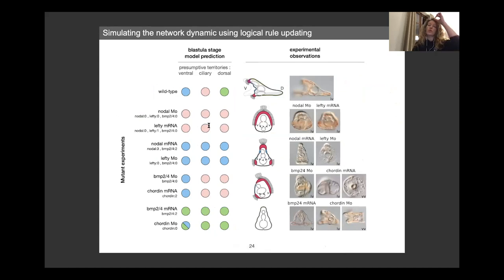So we've done that for wild-type condition, as well as different perturbations for each of the three territories. And we can see that most of the time, we are able to recapitulate correctly the expected pattern in the embryos. So both for wild-type and for perturbation,